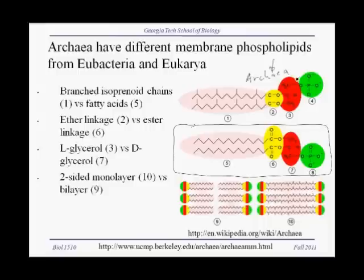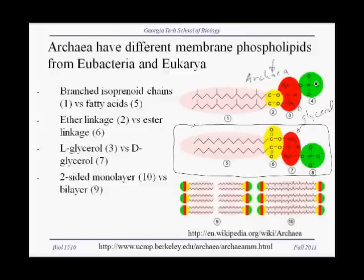Archaea do use glycerol, shown here in red — just like in bacteria and eukaryotes — except the form of glycerol they use is a stereoisomer. It's a mirror image of the glycerol used by bacteria and eukaryotes, and it's very different for enzymes that use glycerol. There is also a phosphate attached to glycerol, just like in bacteria and eukaryotes, so there is some similarity, but remember the glycerol is a different stereoisomer.